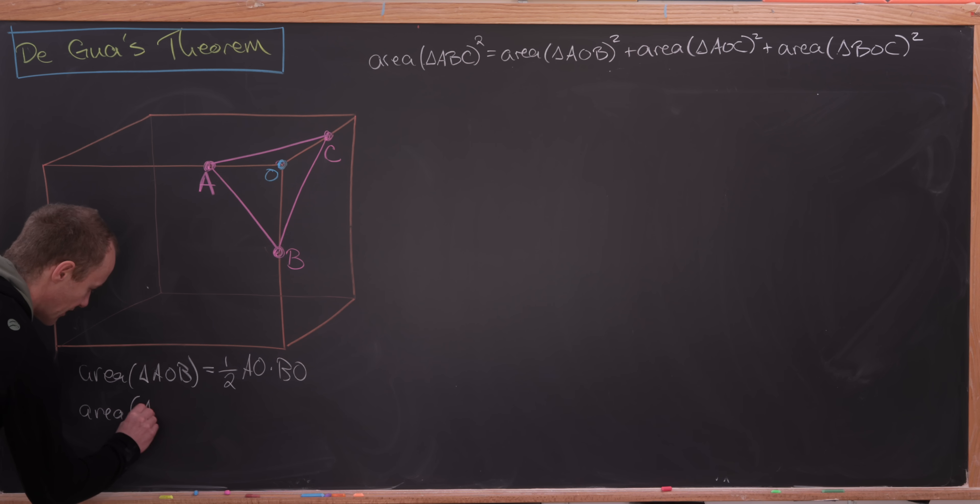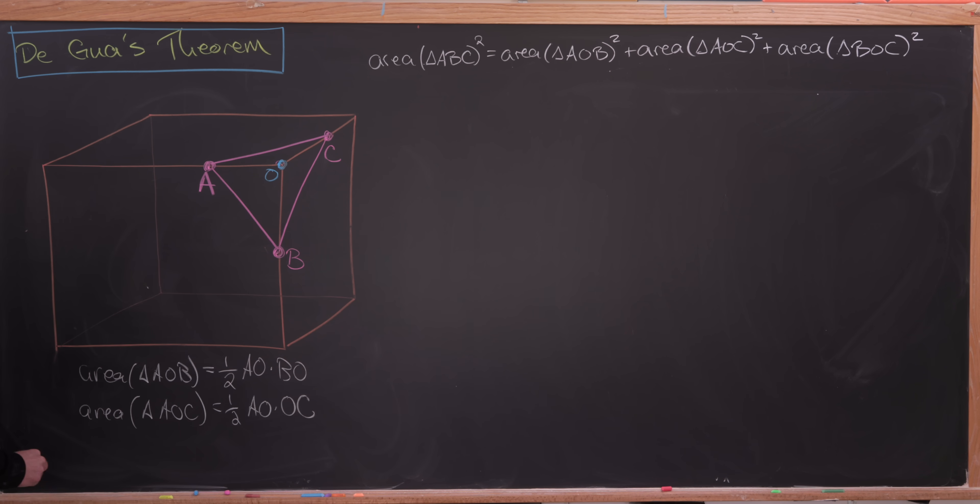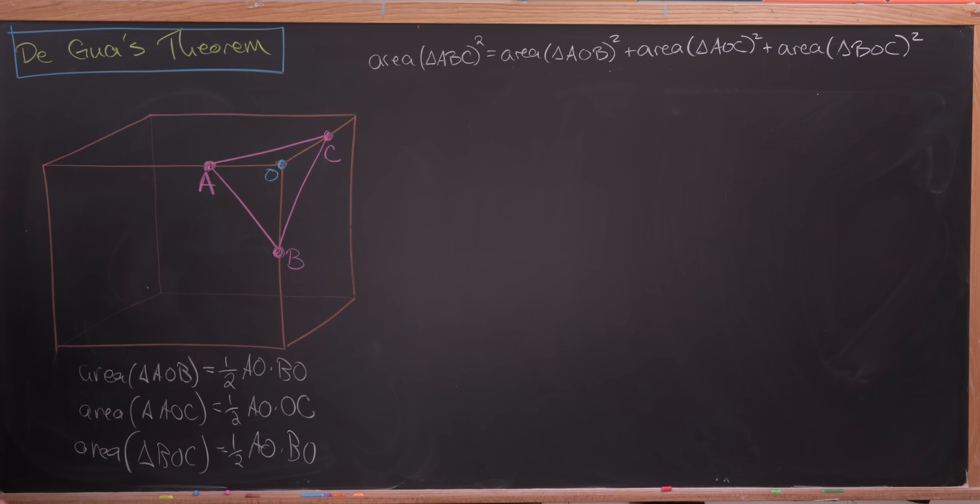Similarly, the area of triangle AOC will be one-half AO times OC. And then the area of the remaining triangle, triangle BOC, will be one-half AO times the length BO.